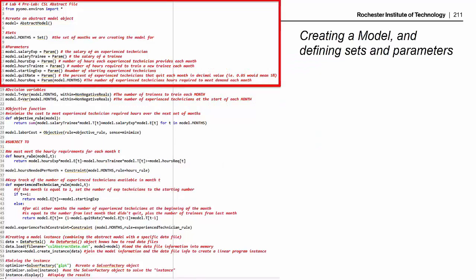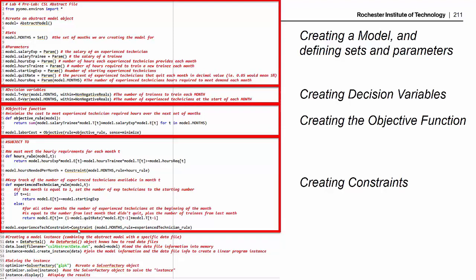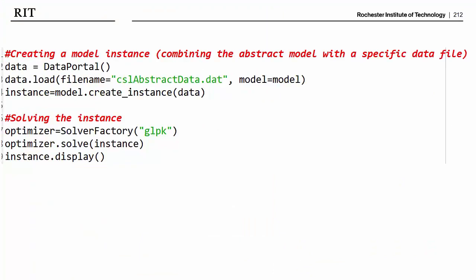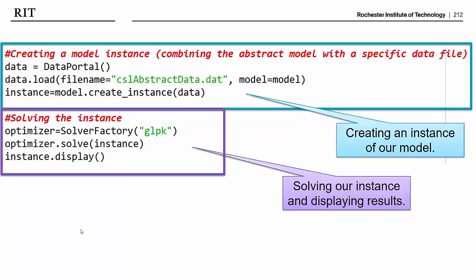Looking at our code, so far we have created an abstract model object, defined one set and a bunch of parameters, made our decision variables, created our objective function, and added our constraints to the model. Now we're at these bottom two sections of the code, where first we're going to merge our model and data files together to create an instance, and then we are going to solve that instance of the model. We're basically in this video looking at these six lines of code. These first three lines of code are responsible for creating an instance of our model, and these second three lines of code solve the model and display the results.